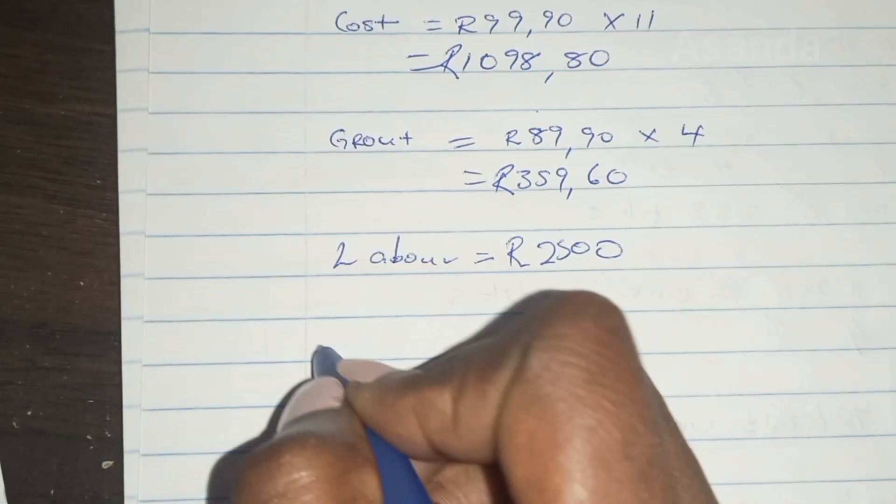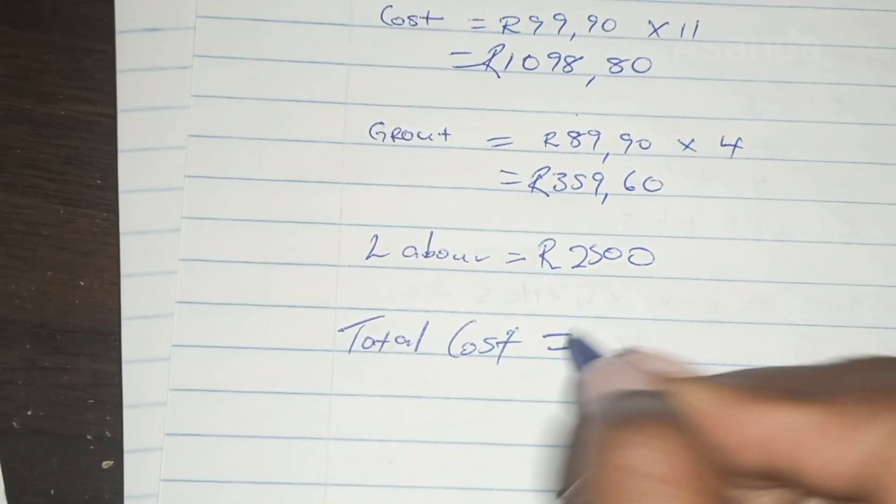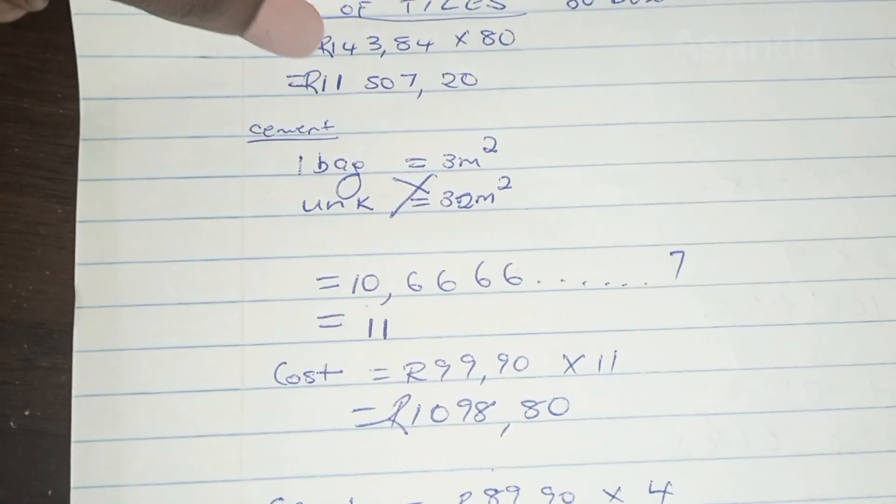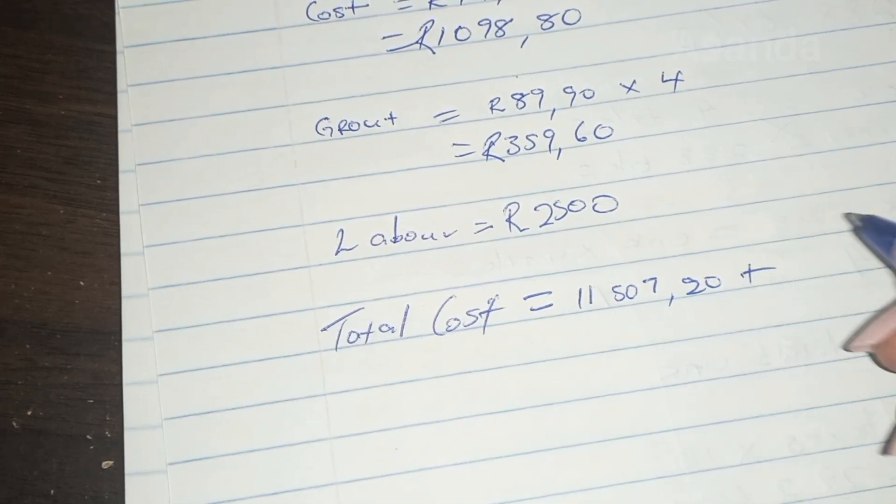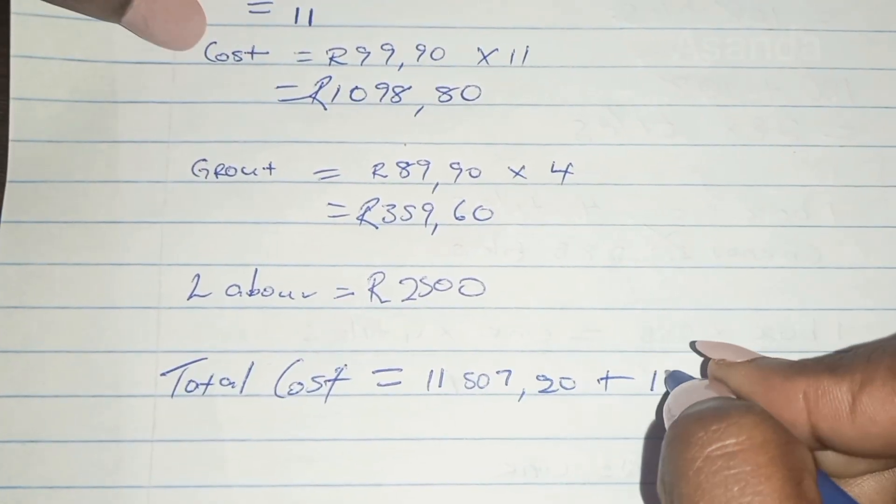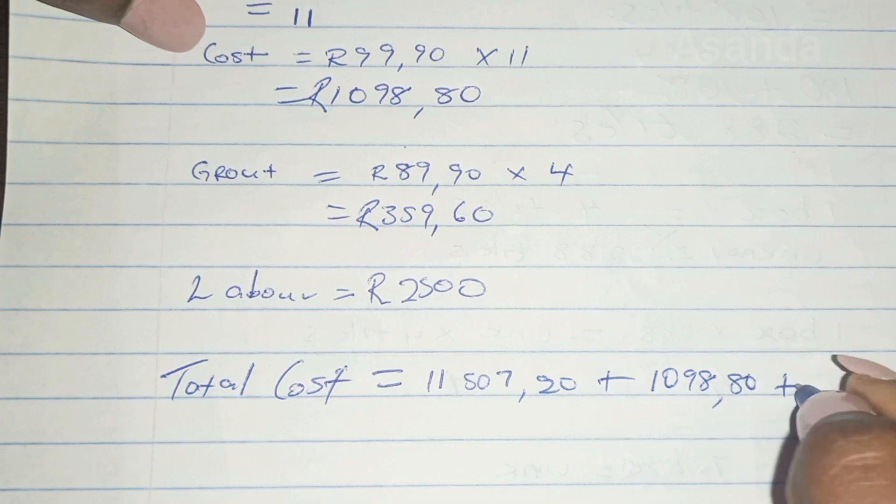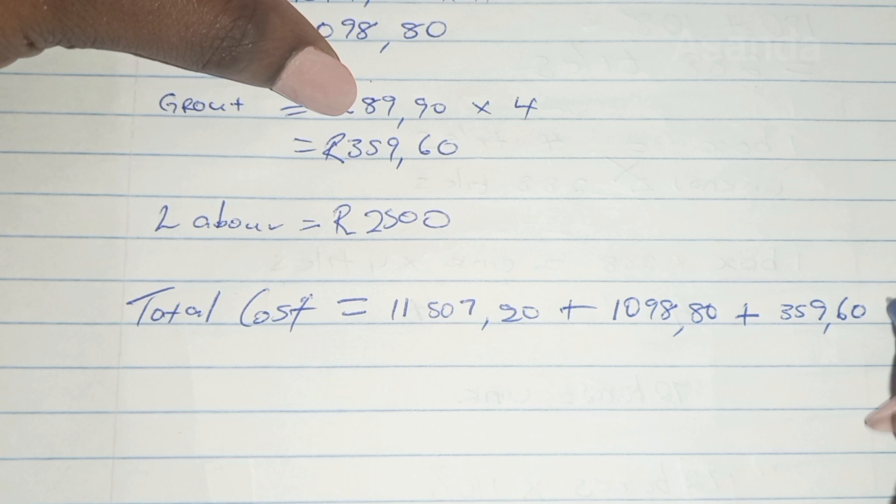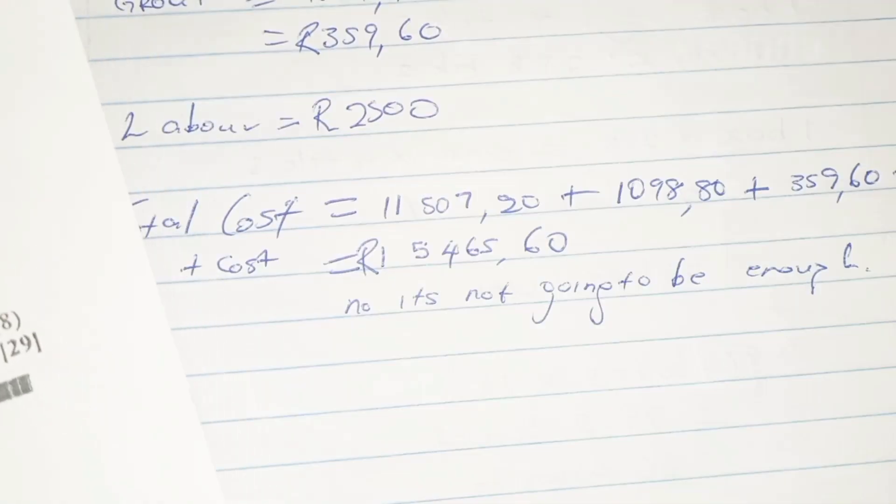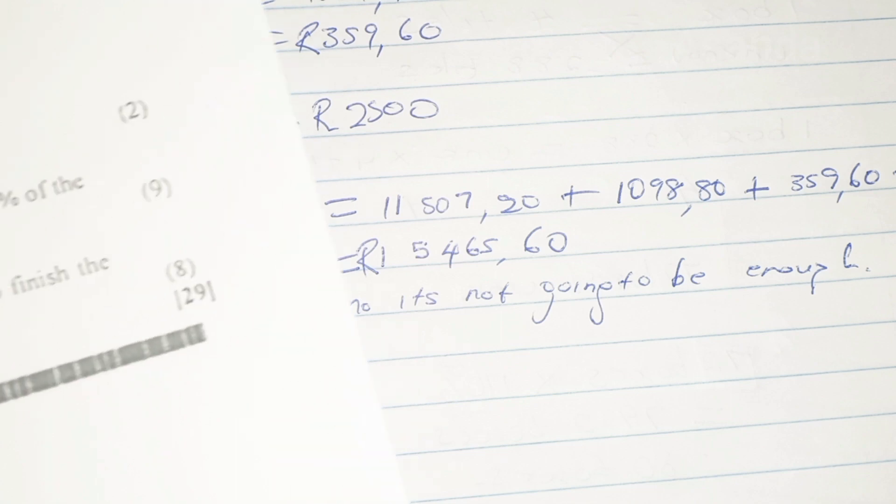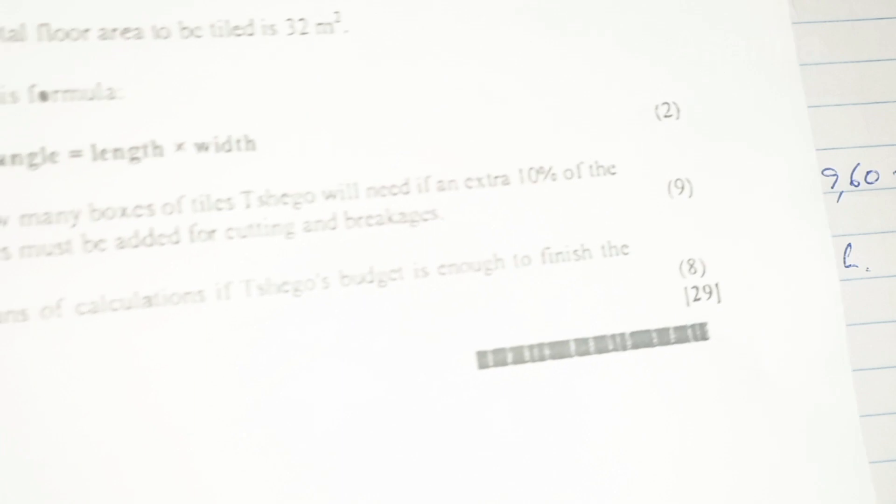Let's find out how much she's actually paying. So the total cost is equal to, start from the top, the tiles. There they are, 11,500 and 7.20 plus the cement, which is 1,098.80 plus 359.60 cents plus the labor, which is 2,500. So the answer will be 15,465 rands and 60 cents. So it's not going to be enough, her money, because she has 15,000 rand. But then again, this could be an over-calculation. If you use area, it could give you maybe exactly 15,000. But as you can see, this difference is only about 400, 500 rand.